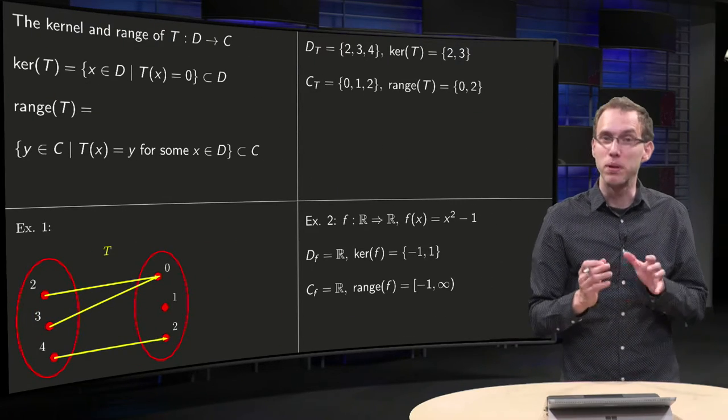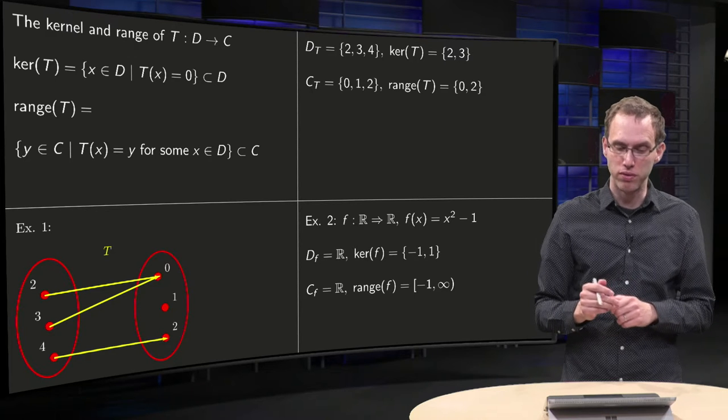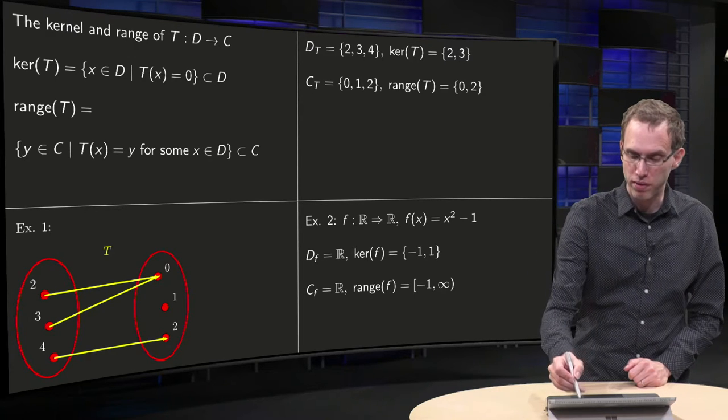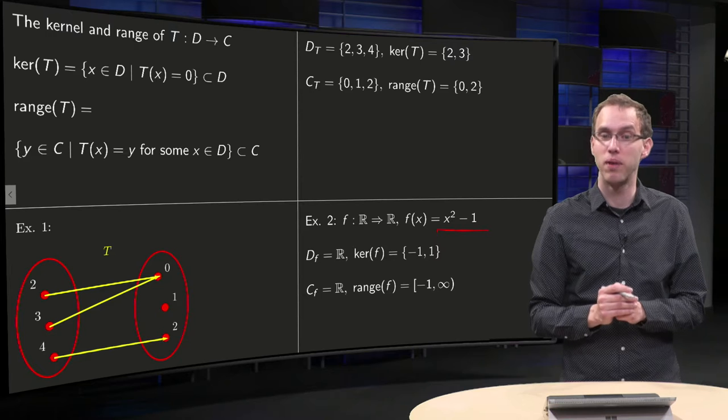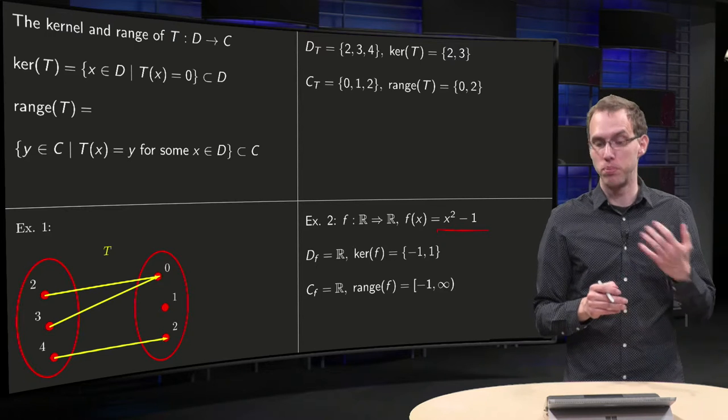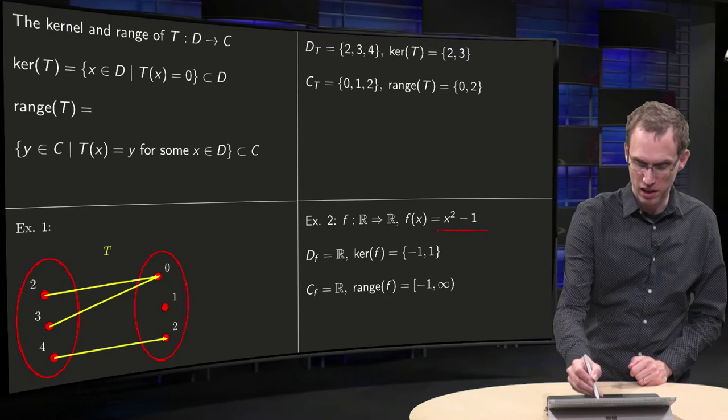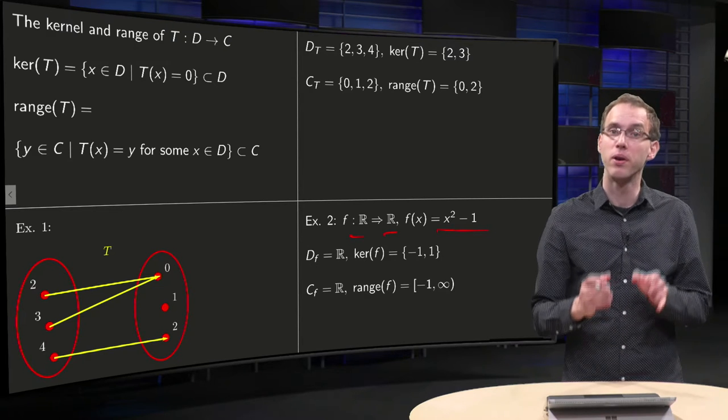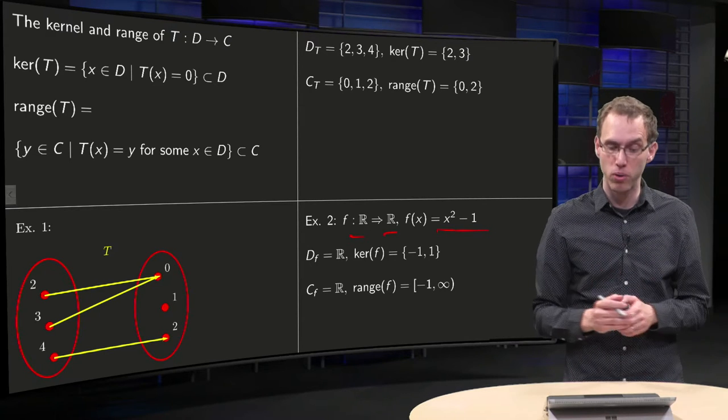Let's do a second example, a bit more complicated, a function from ℝ to ℝ. If we have our function f of x equals x squared minus 1, what's the domain and the codomain? We can read off directly what the domain and the codomain are: Domain of ℝ and codomain also of ℝ.